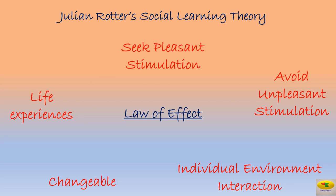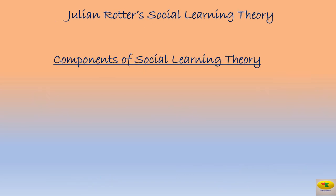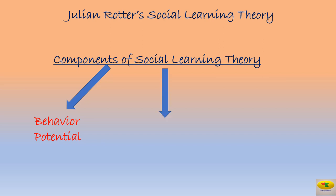So these were the five points covered under the law of effect. We shall move further to the second part, which is the components of social learning theory. There are three main components. The first one is the behavior potential — it is the likelihood of engaging in a particular behavior in a specific situation. The second is expectancy — it is a subjective probability that a given behavior will lead to a particular outcome.